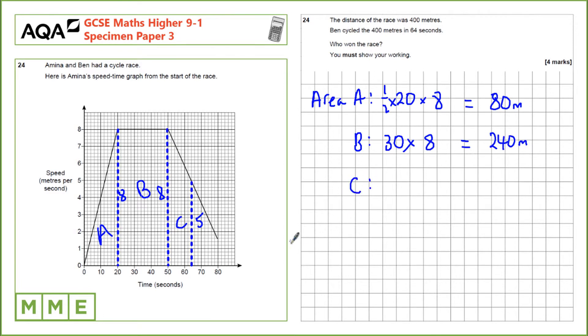And then the area of C is the trapezium. So we need to find the average of these two sides. So a half of 8 plus 5, and then multiply by the time in seconds. So that's 50 to 64, 14 seconds, which gives us 91 metres.